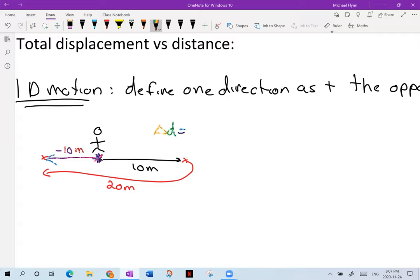So his total displacement would be, I'll use a rainbow for this, a vector where he starts right here, my little rainbow vector, to where he ends, and that would be negative 10 meters from where he started. And so your displacement would equal negative 10 meters, or if you like, 10 meters west.